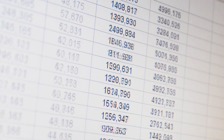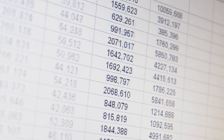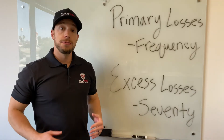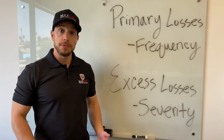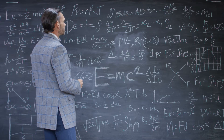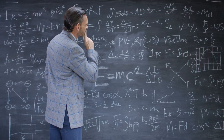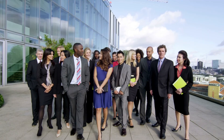Expected losses are then calculated using your payroll data per class code, applying the expected loss ratio to figure out how your losses stack up. The final x-mod calculation compares your primary and excess loss figures to those expected of a company of the same size and industry type.